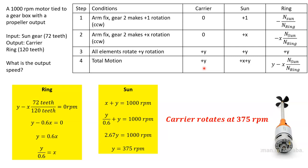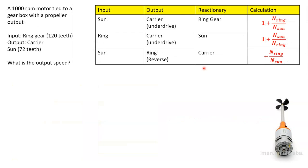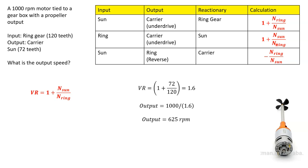The tabular method and the algebraic method verify one another — both give the underdrive condition. Now we can look at this with the ring as the input. The ring is the input, the carrier is still the output, and the sun is set to 0 — the reactionary with no RPMs. The velocity ratio equation changes slightly: it's now 1 plus the number of teeth on the sun over the number of teeth on the ring. Plugging in: 1 plus 72 over 120 gives a velocity ratio of 1.6. So the output is 1,000 over 1.6, or 625 RPM.